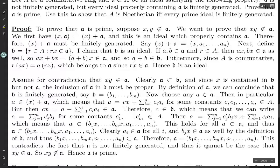So A is finitely generated — that contradicts the fact that it's not finitely generated. Therefore it cannot be the case that xy is in A, as we assumed for contradiction. Hence xy is not in A, and therefore A is prime. That's the first part.